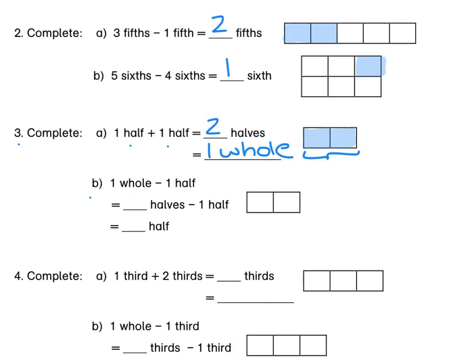For B, if we start with 1 whole — so let's say we start with this whole block — and if we minus 1 half from it, this means that 1 whole is equal to 2 halves. And we minus that 1 half, so we are left with 1 half.